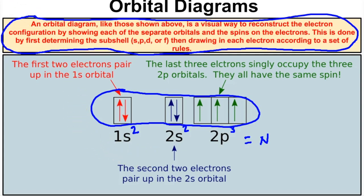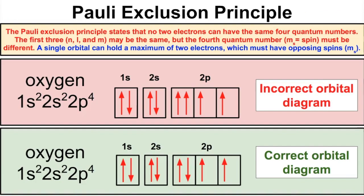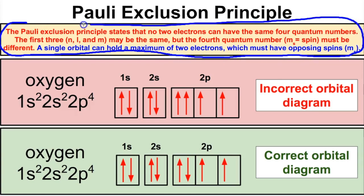Before we start drawing orbital diagrams, let's look at a few rules to keep in mind. The first rule is called the Pauli Exclusion Principle. When drawing orbital diagrams, electrons have a negative charge, and when two negative particles are very close together in atomic orbitals, they repel each other, causing the spins of those electrons to be opposite. So if you have two electrons in an s orbital, one spins one way — indicated by an up arrow — and the other spins in the opposite direction — indicated by a down arrow.